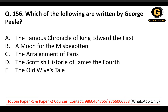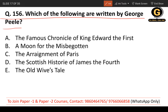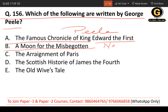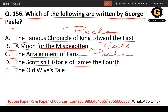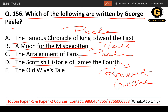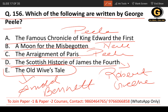Question 156: Which of the following are written by George Peele? The Famous Chronicle of King Edward I was written by Peele. A Moon for the Misbegotten was by Eugene O'Neill. The Arraignment of Paris was also written by George Peele. The Scottish History of James IV was by Robert Greene. The Old Wife's Tale was by Arnold Bennett. So A and C are the correct answers.